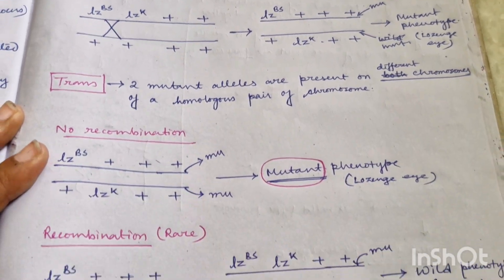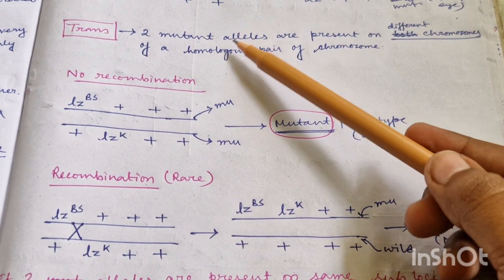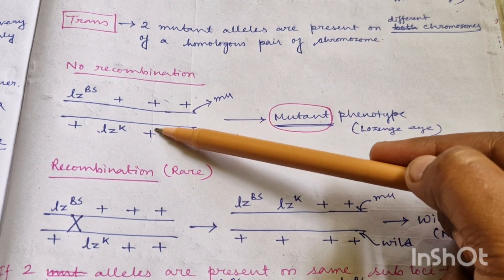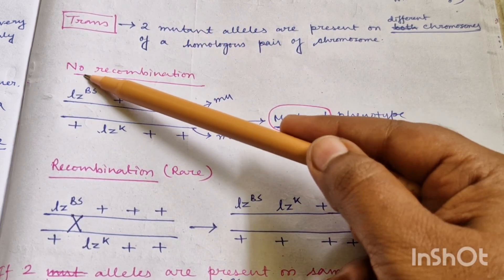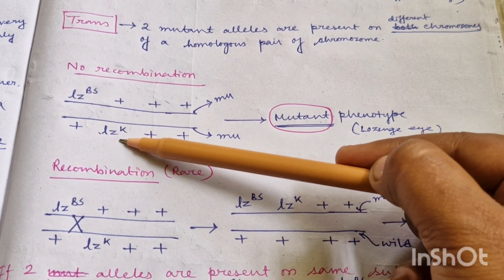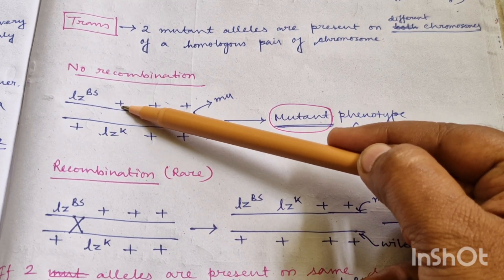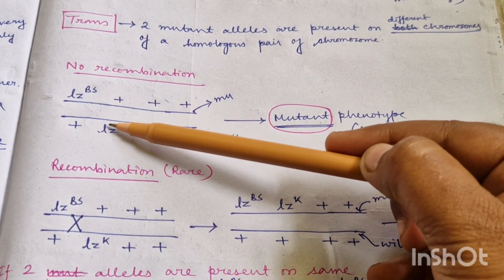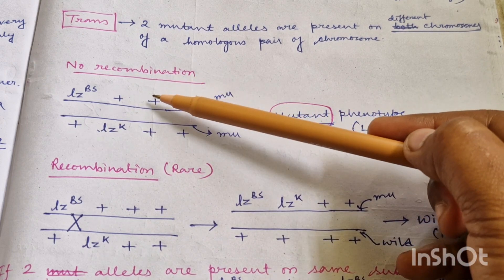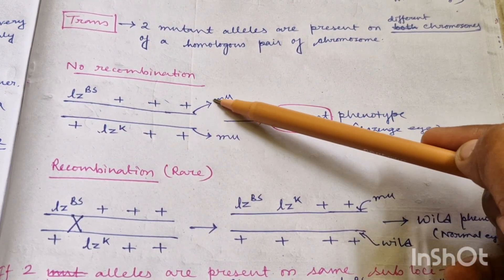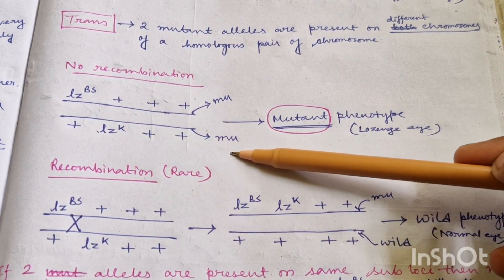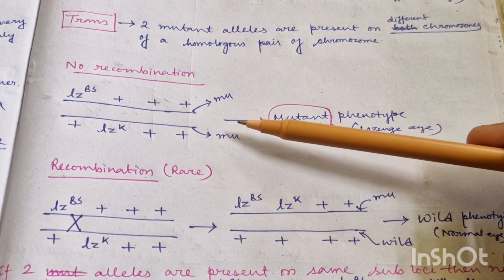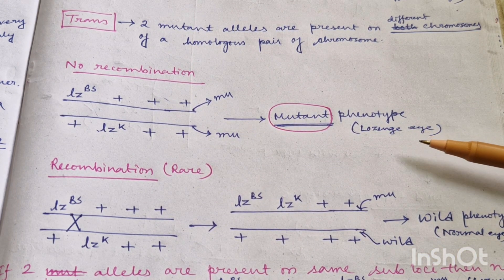Next, if the combination is trans combination, what will happen? Trans combination means where two mutant alleles are present on different chromosomes of a homologous pair. The two mutant alleles are LZBS for sublocus one and LZK for sublocus two, but they are not present on the same chromosome like cis configuration. Instead, LZBS is present on one chromosome and LZK is present on the other chromosome — this is trans configuration.